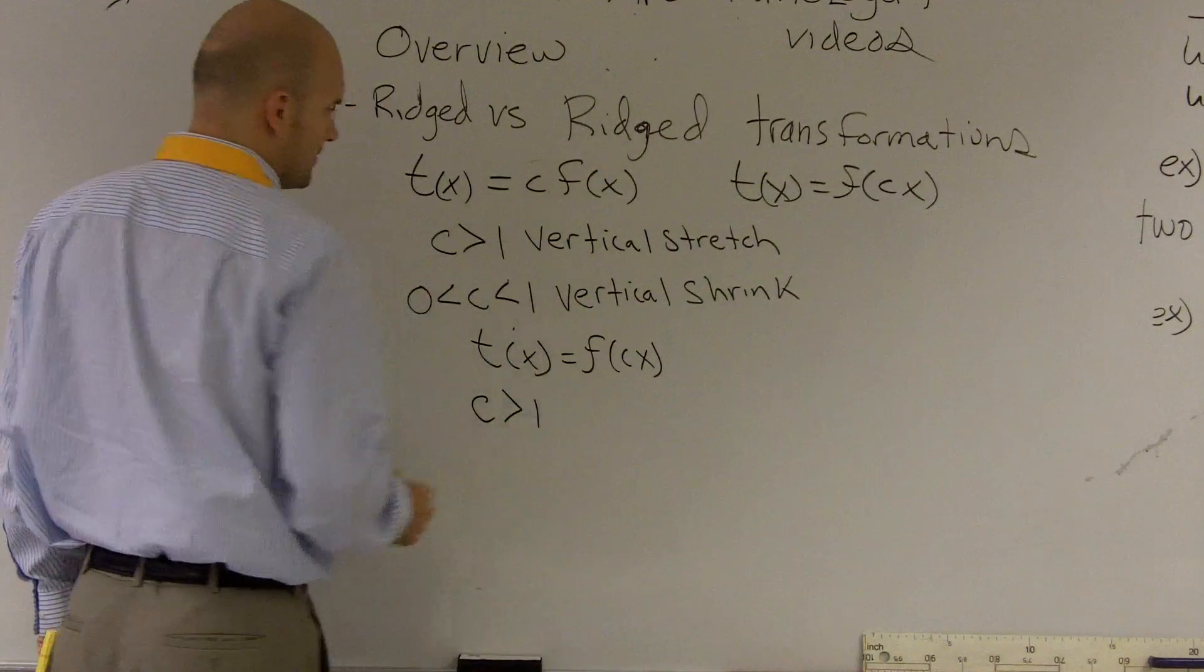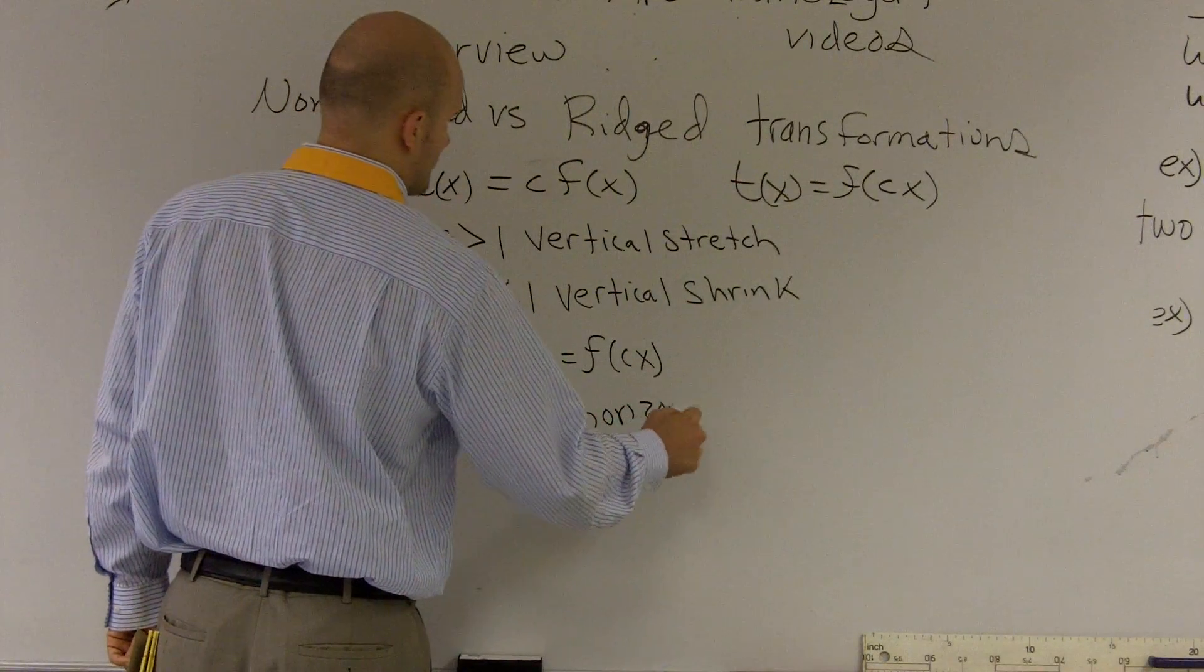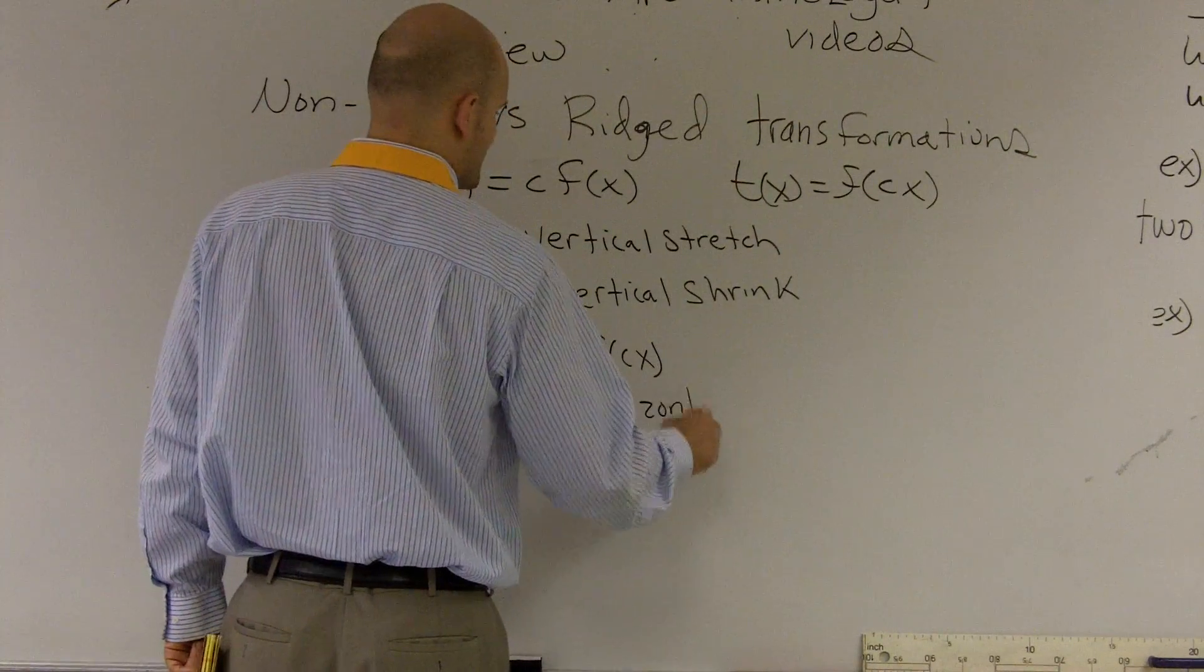So now, when my c is greater than 1, I'm going to have a horizontal shrink.